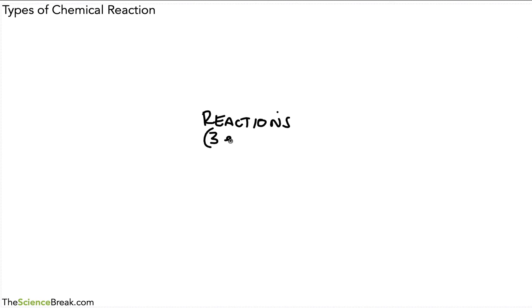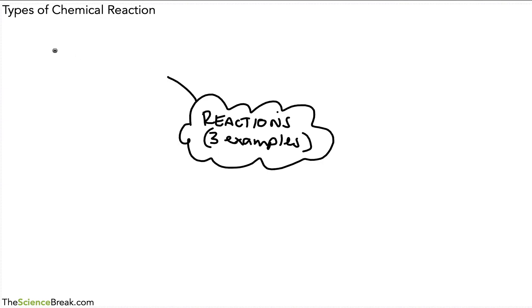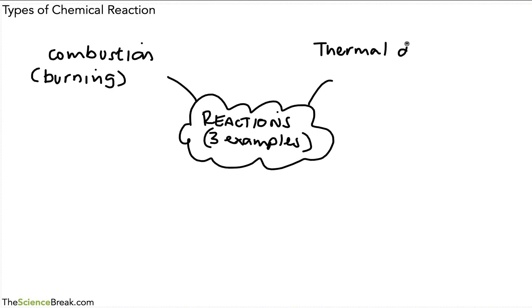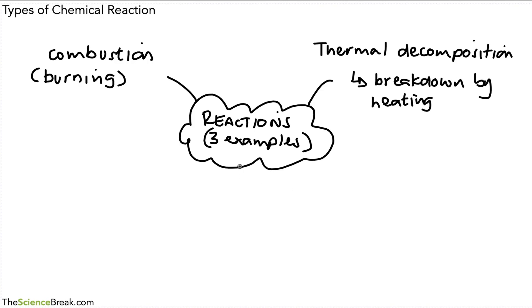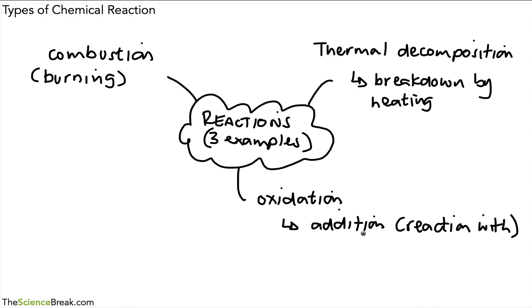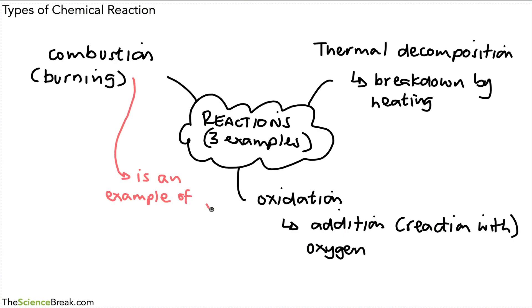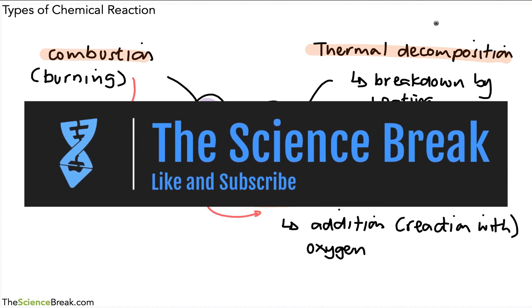So that's pretty much it. We can summarize the three types of chemical reactions we've looked at: the first was combustion, which means burning; the second was thermal decomposition, which is not burning but the breakdown of a chemical by heating it; and the third was oxidation, which is the addition of or reaction with oxygen. Remember, combustion is an example of an oxidation reaction. These are three important examples of reactions that we will look at more in chemistry. Thank you for watching!